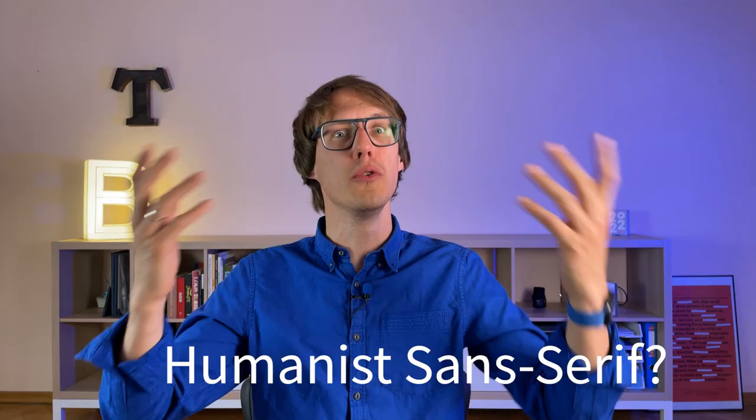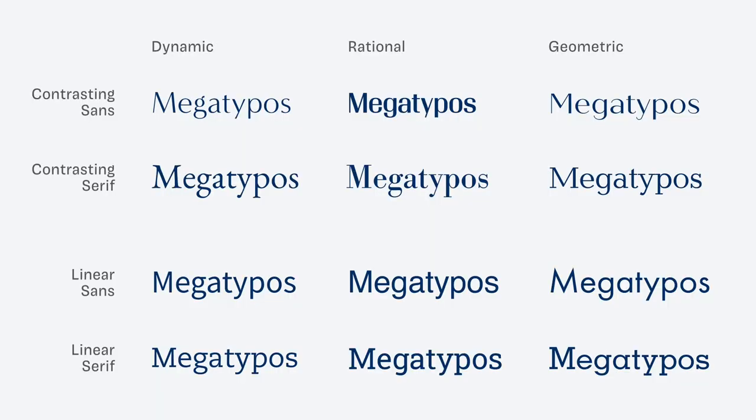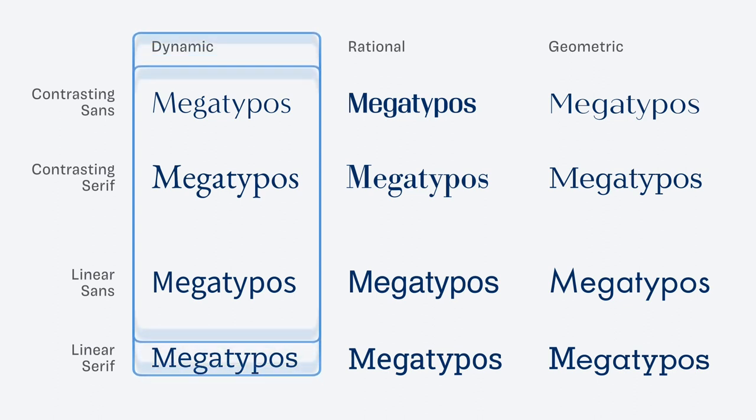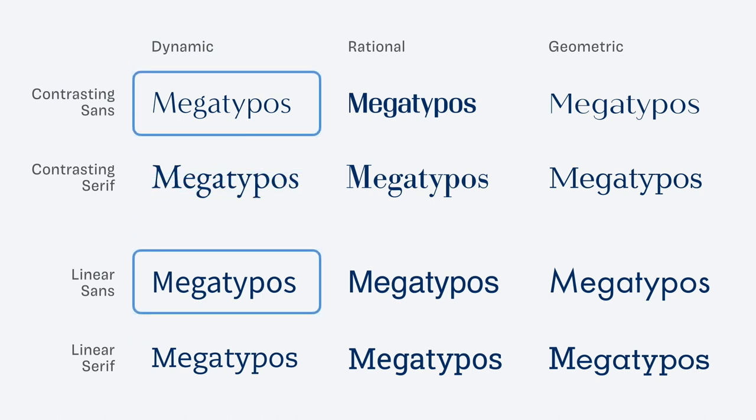Now let's answer the final question: what actually is a humanist sans serif? Humanist shapes are the dynamic shapes we've seen in the form model. Sans serif simply means without serifs. So what defines a humanist shape? All the things that define our dynamic form model: open shapes and a slight angle. Now you have a way to spot these kinds of typefaces easily.